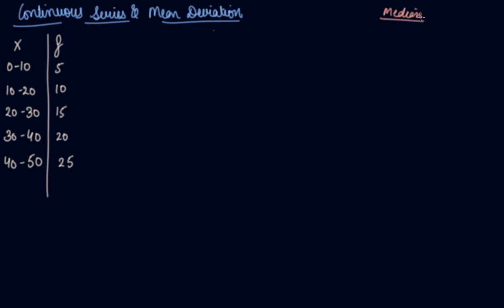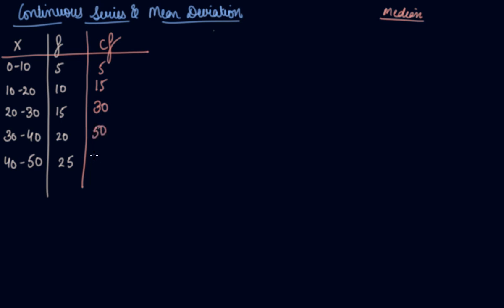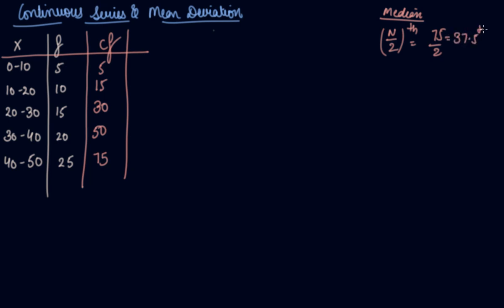How we used to calculate median in the continuous series? We used to find out the cumulative frequency first: 5, 15, 30, 50 and 75. After that, we used to find out the median class. 75 divided by 2 is the 37.5th item.